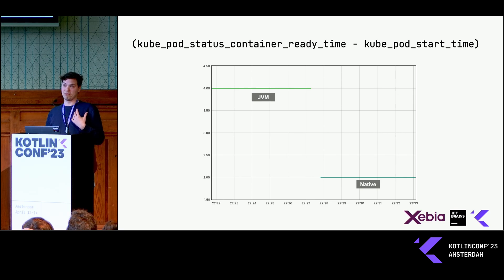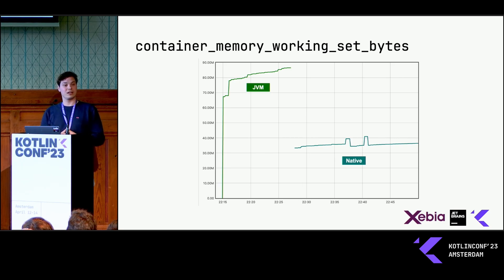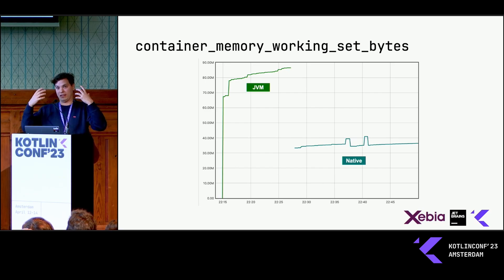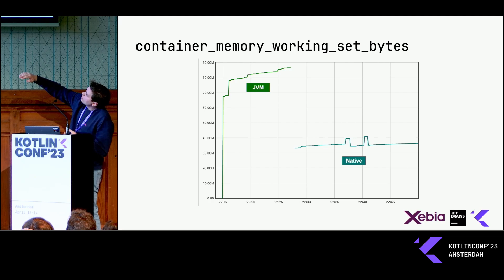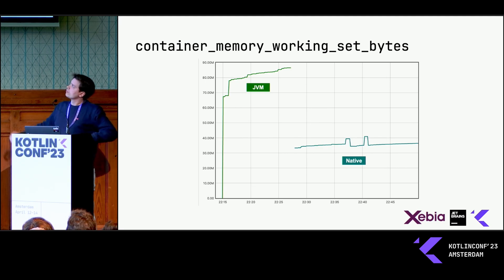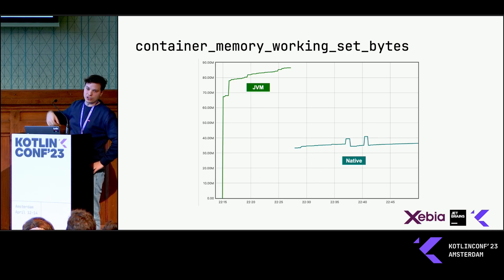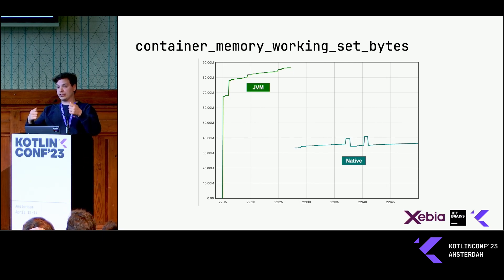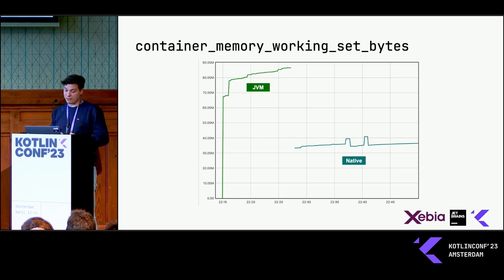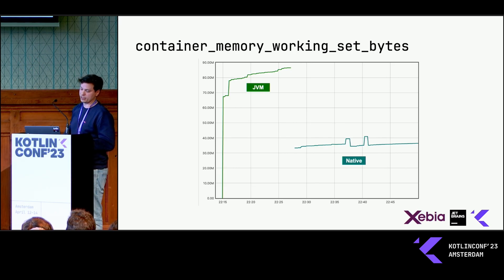For memory usage — usually a cost factor when running something — native is very interesting. The JVM does a lot of stuff for you, but it also costs a lot of memory. You see that the JVM almost immediately passes the threshold and gradually even grows a bit, especially if you query different users. While for native, you see that it's quite flat. Nice.